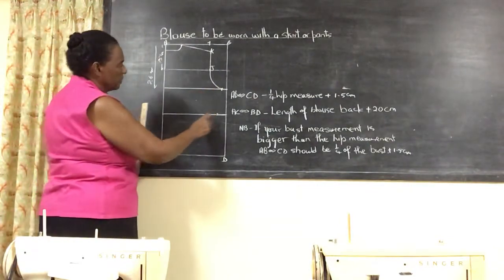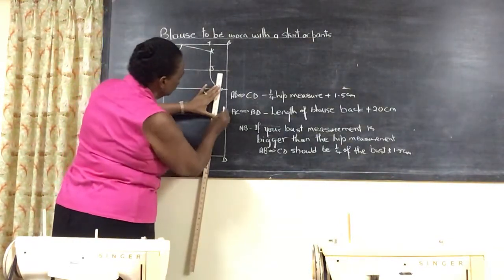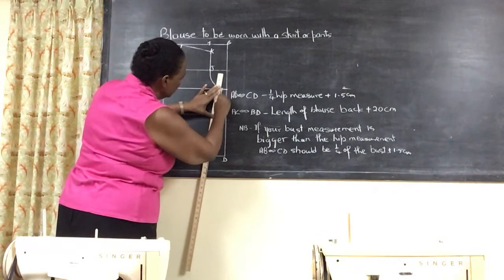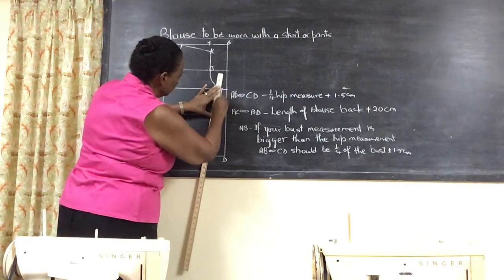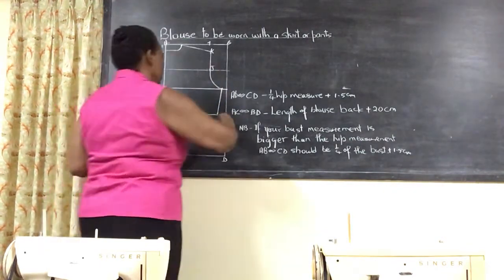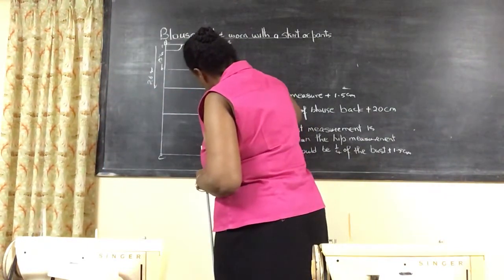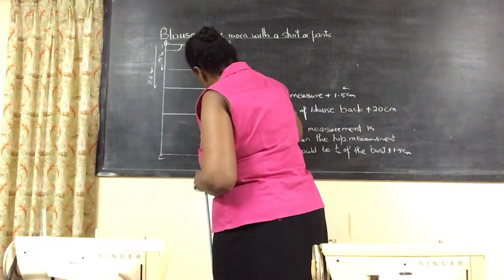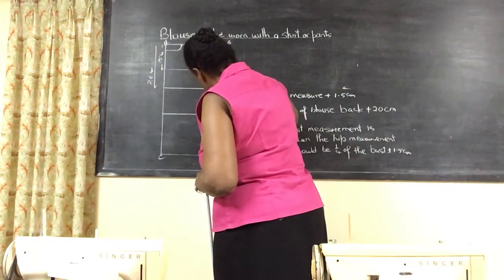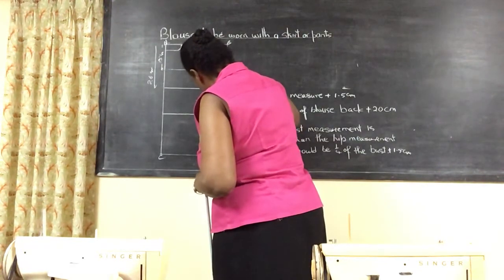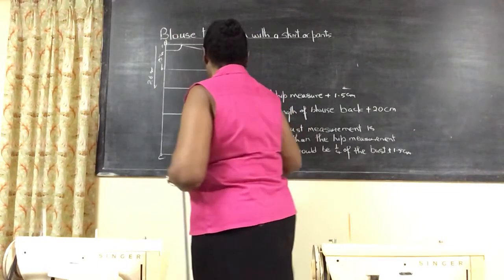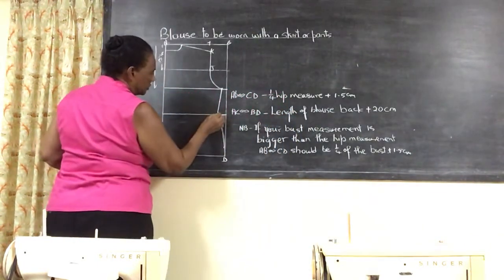Now to get the shape at the side, come in 2.5 centimeters smaller than your bust measurement. Then shape the side from there. Soften this area so you don't have to pull in when wearing your blouse.